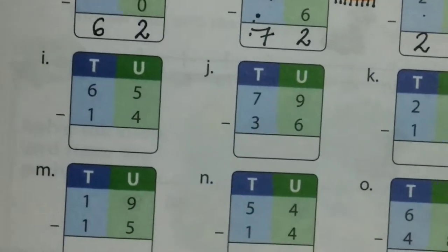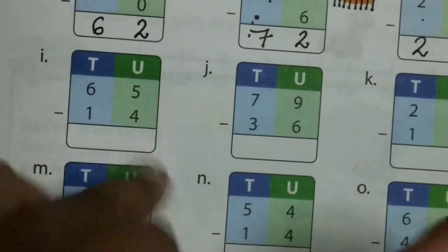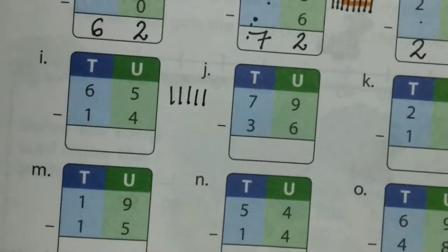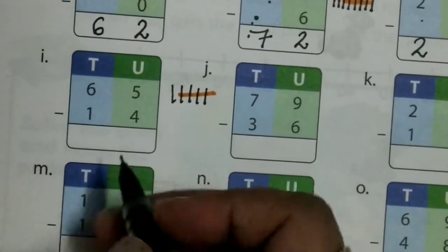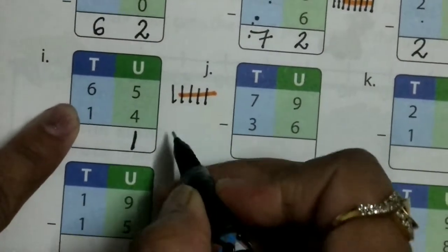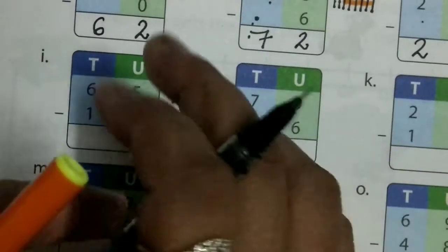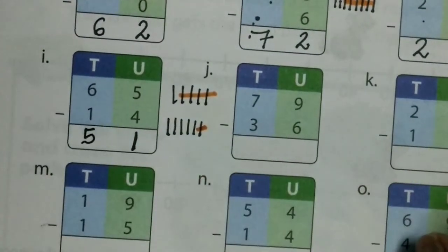Now come to question number I. In the units column, 5 minus 4. You can take the help of your fingers or draw lines: 1, 2, 3, 4, 5. Cut 4 lines — it will be 1. In the tens column, 6 minus 1: draw 6 lines — 1, 2, 3, 4, 5, 6. Take away 1. Remaining: 1, 2, 3, 4, 5. So 6 minus 1 equals 5.